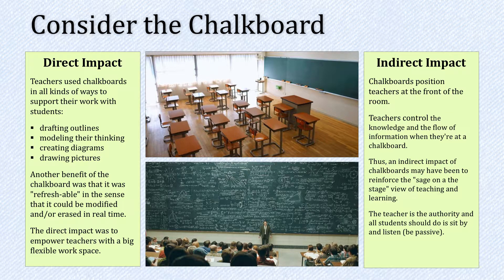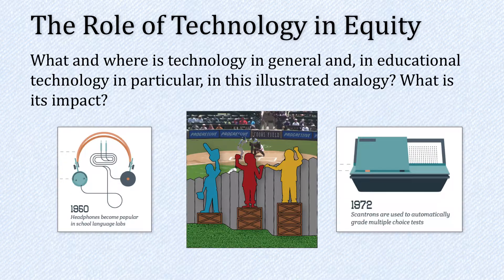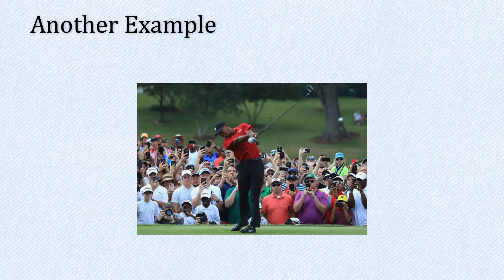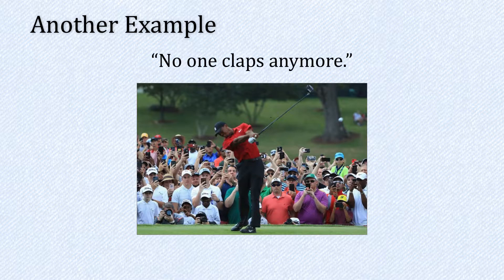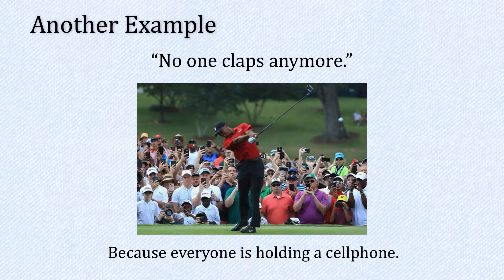So this is an example of analyzing chalkboards for its direct and indirect impacts. Part of thinking about the role of technology in equity is to consider a given technology's direct and indirect impact. Now, I want to share another example I stumbled across while watching TV. Some of you may have heard that Tiger Woods won an important tournament over the weekend. What's interesting is he also won tournaments many years ago, but what he shared with reporters is what's different about then and now — no one claps anymore. The reason is because everyone these days is holding a cell phone. Cell phones aren't designed to prevent people from clapping, but it's a side effect, a byproduct of the intended design of cell phones.